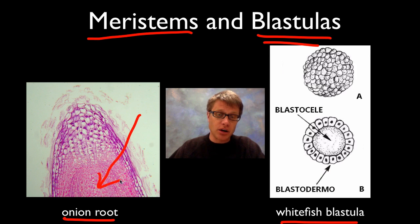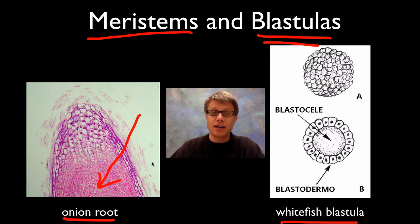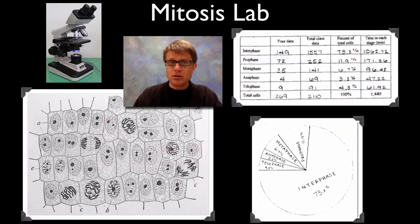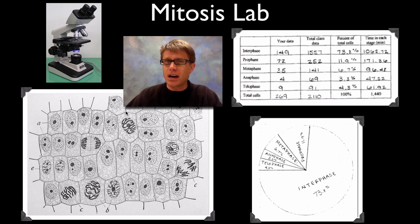How does a root grow? There's an apical root meristem at the tip, and it copies those cells over and over again, so the root gets longer and longer as those cells divide. Basically what you can do is look at the cells — this is just a diagram — look at what phase they're in, count the number of cells in each phase, and figure out how much time they spend in each of those different phases.